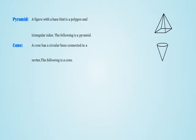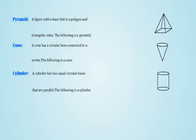Cone: A cone has a circular base connected to a vertex. The following is a cone. 10. Cylinder: A cylinder has two equal circular bases that are parallel. The following is a cylinder.